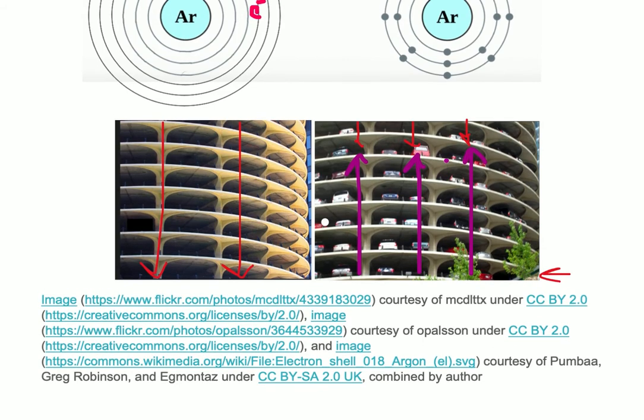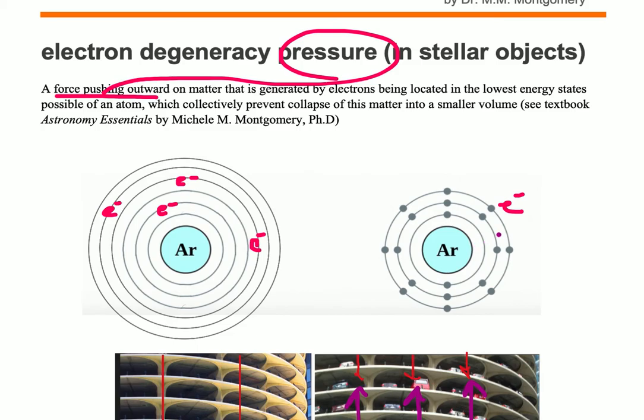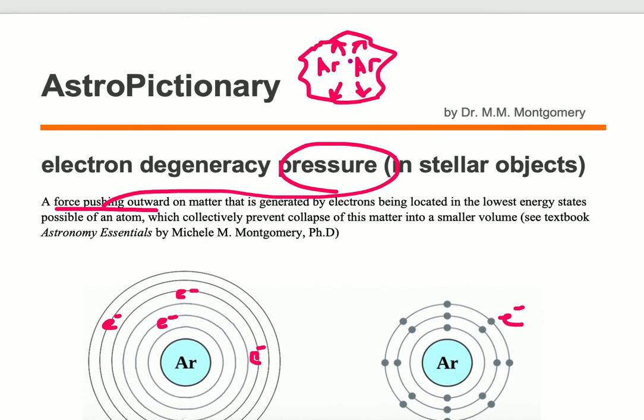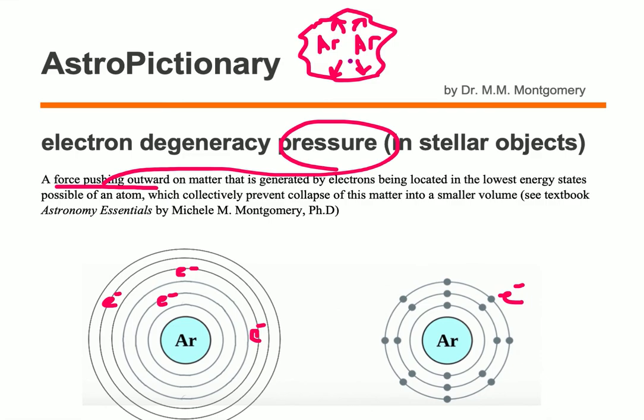So this is an analogy in comparison to the electrons filling the ground state up of the orbitals to prevent the atoms from collapsing further down, which together collectively prevent the collapse of this matter from getting smaller in size. And the pressure that supports this particular matter is called electron degeneracy pressure.